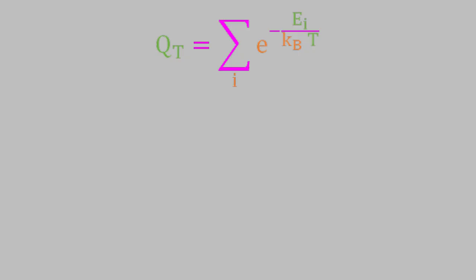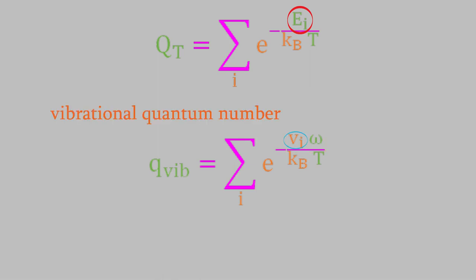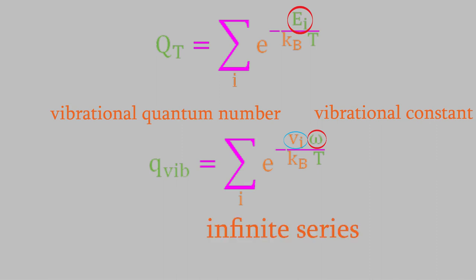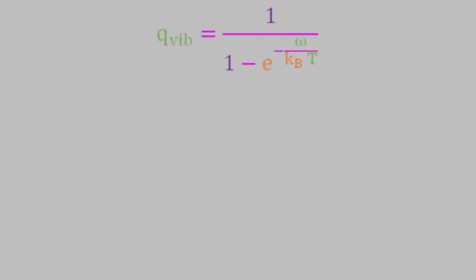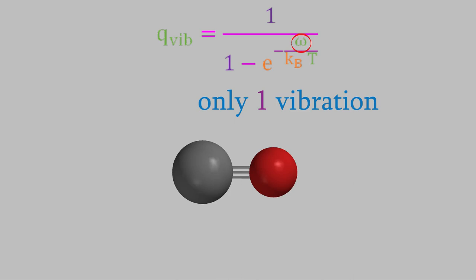First, let's look at the vibrational partition function. The energy of a vibration can be written with v as the vibrational level number and omega as the vibrational constant — unique for a particular vibration with units of energy. As v increases, each term in the summation becomes smaller exponentially. That summation is an infinite series that can be written in closed form. Notice that this partition function contains only one vibrational constant — it only allows for one vibration. Only diatomic molecules have just one vibration; molecules with more than two atoms will have multiple vibrations, so the vibrational partition function will be a product of partition functions, one for each possible vibration.